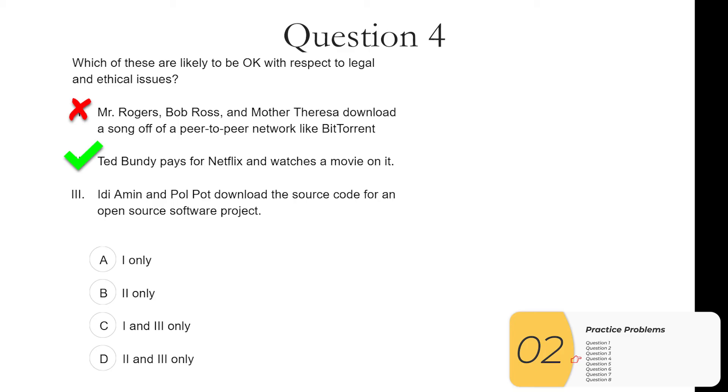Three. Idi Amin and Pol Pot download the source code for an open source software project. Again, Idi Amin and Pol Pot are some of the worst people in the history of the world. But with that said, the whole idea behind open source software is that one can download the software, the code anyway, anytime that one likes. So this is okay. So two and three are okay with respect to legal and ethical issues. So what we have is the answer.